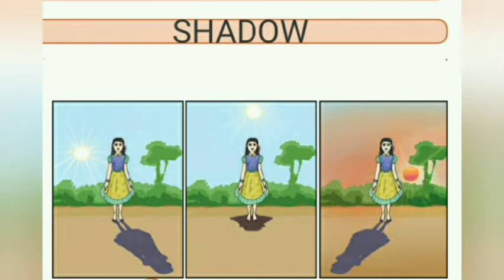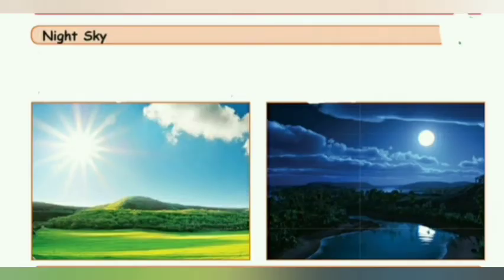Look at the picture — you are standing in the same position but there are three different images. Stand with your back to the sun. Now look at the ground in front of you. What we see is a shadow. We can find that a shadow moves with us.